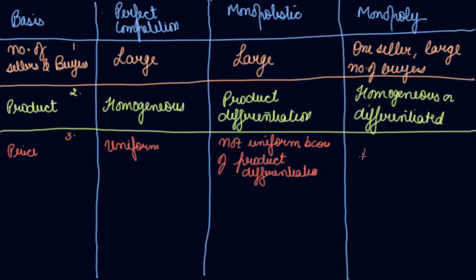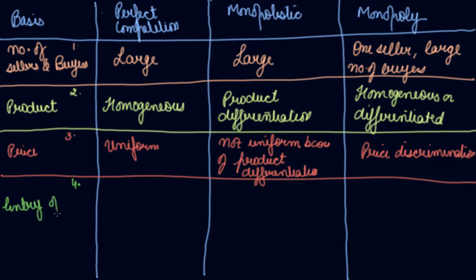And here it is price discrimination. Then the fourth point of differentiation we have is entry of firms. Free entry in perfect competition. Not absolutely freedom in monopolistic. Not possible in monopoly.